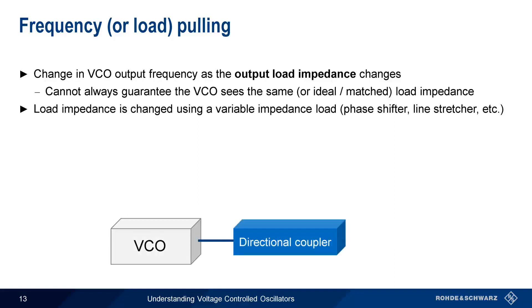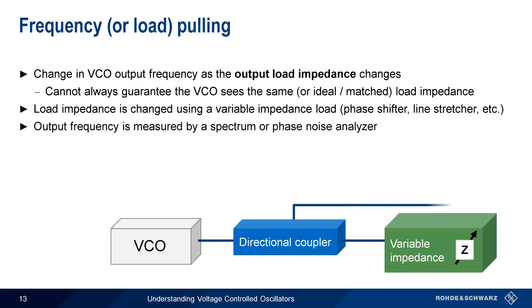In order to test frequency pulling, we need a directional coupler and some type of variable impedance load, such as a phase shifter, a sliding short, a line stretcher, etc.